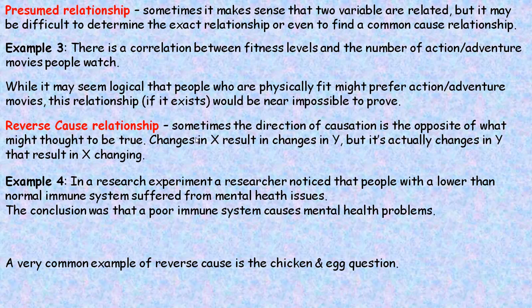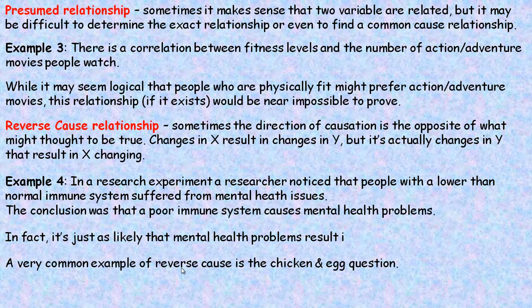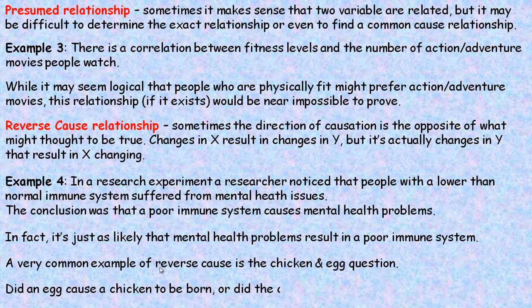A reverse cause relationship is when the direction of causation is the opposite of what you might think. Changes in X seem to result in changes in Y, but maybe it's actually the changes in Y that result in X changing. For example, a researcher noticed people with lower than normal immune systems suffer from mental health issues and concluded that a poor immune system causes mental health problems. In fact, it's just as likely that mental health problems result in a poor immune system. A very common example of reverse causation is the chicken and egg question — which came first?